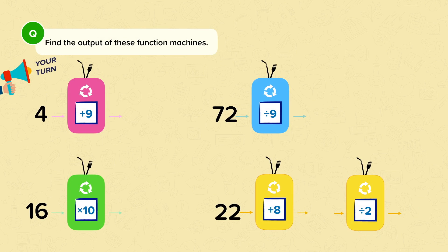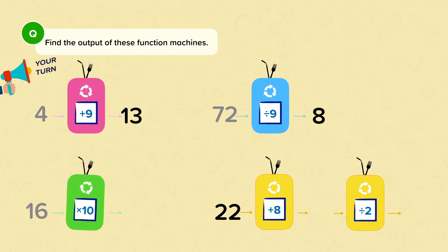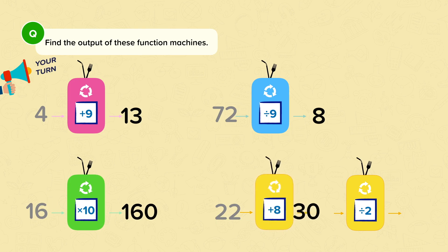Your turn. Find the output of these function machines. Pause the video now. Let's check your answers. 4 plus 9 is 13. 72 divided by 9 is 8. 16 times 10 is 160. And 22 plus 8 is 30. 30 divided by 2 is 15.